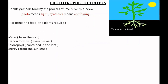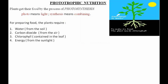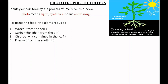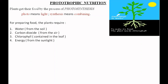For the preparation of food, plants require water from the soil, carbon dioxide from the air, chlorophyll contained in the leaf, and energy from the sunlight. Plant cells contain a number of chloroplasts, and these chloroplasts contain the green pigment called chlorophyll. Chlorophyll is responsible for the green color of the leaves, and it absorbs sunlight which provides energy for the whole process of photosynthesis to take place.